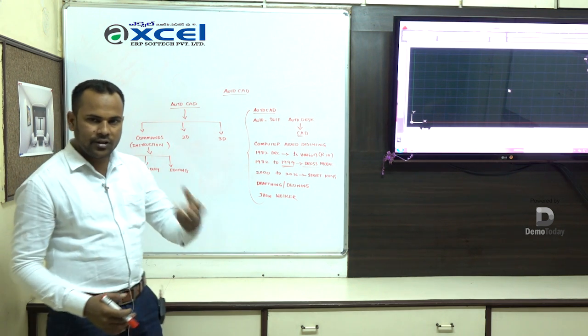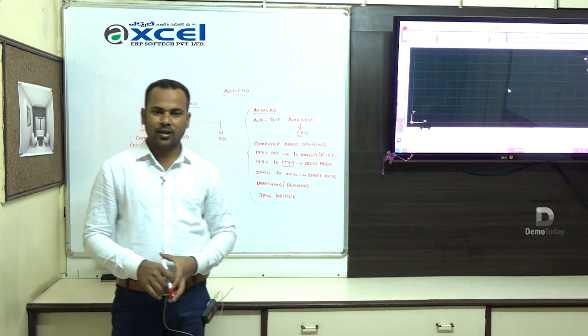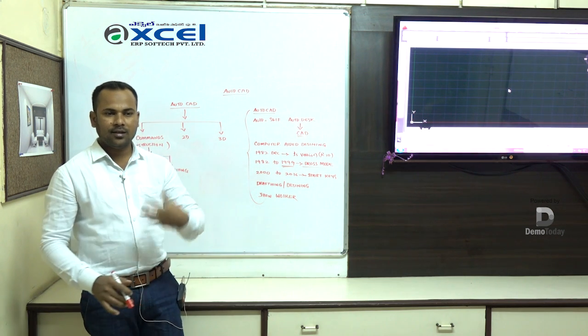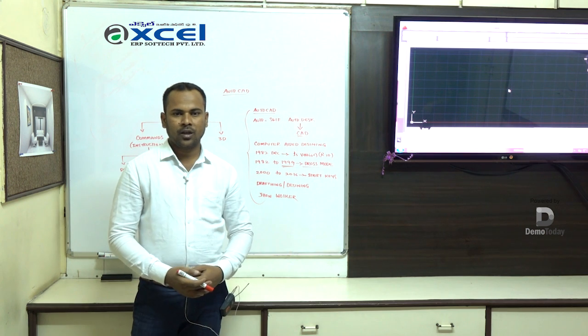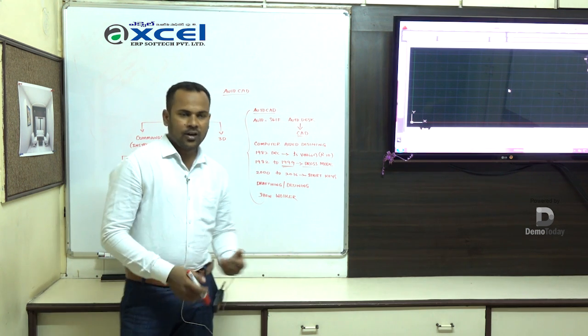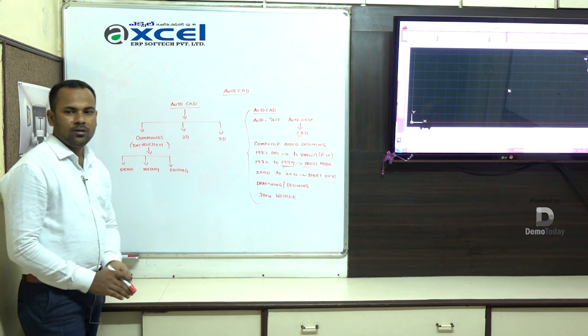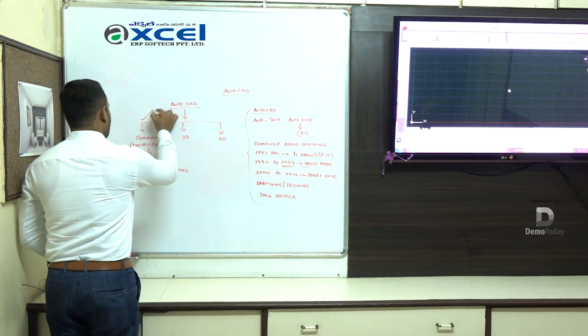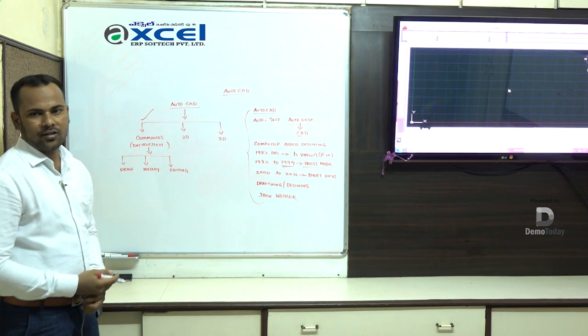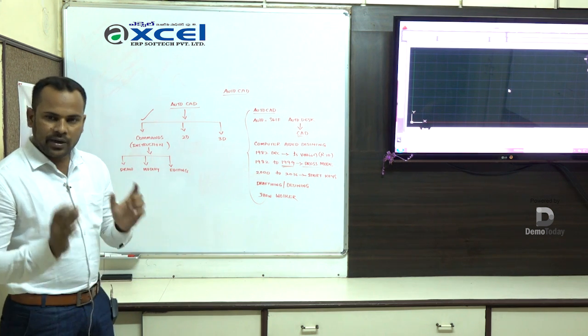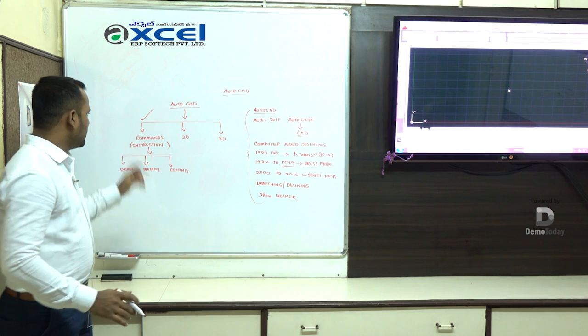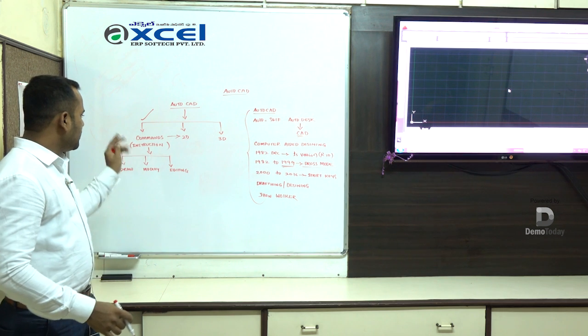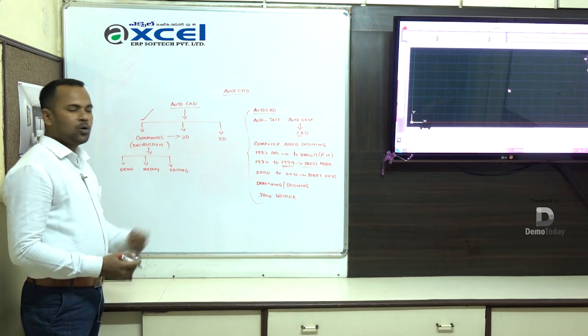Editing commands - if you draw multiple objects, then you can do single edit. That's editing. First stage is basic commands. We complete the basic commands, then we enter to second stage which is 2D.